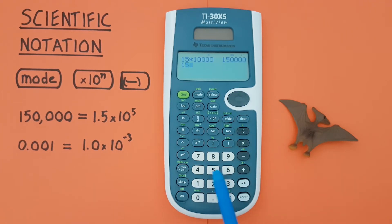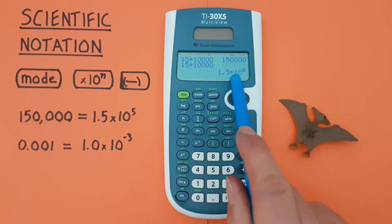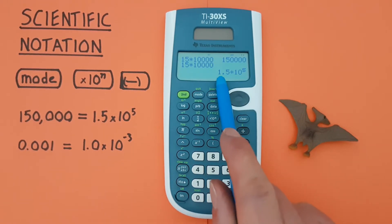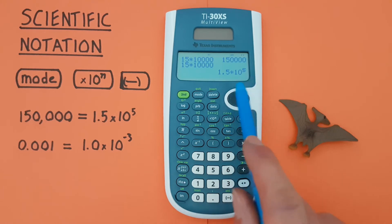Now if we do 15 times 10,000 we get our answer in scientific notation mode. So that's 1.5 times 10 to the power of 5.